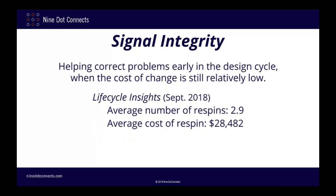Now all of this sounds interesting, but simulation and analysis tend to cost time and money, so why would we even consider doing it? A September 2018 Lifecycle Insights report found that a company will often do an average of almost three re-spins per project, and the cost of these re-spins is an incredible twenty-eight thousand dollars. So based on these numbers, it sure makes sense to spend a little more time and money up front when the cost of making changes is still relatively low.